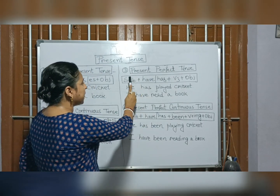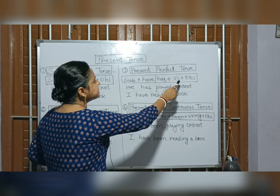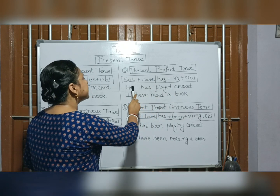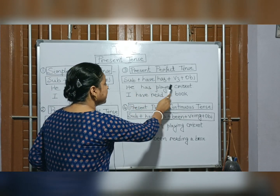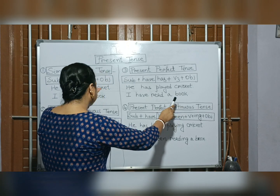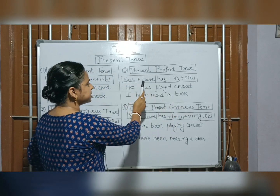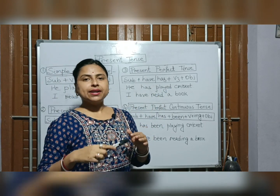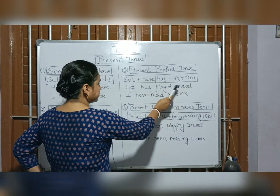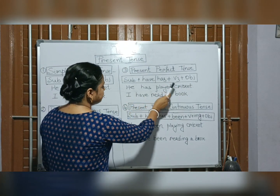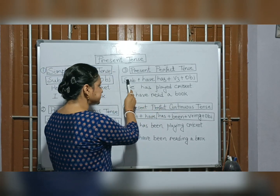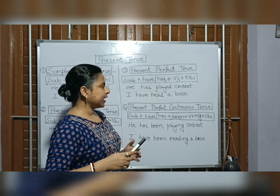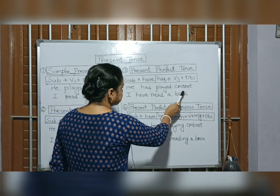For present perfect tense, the structure is: subject plus have or has plus V3 plus object. Example: 'He has played cricket' — 'has' is used because 'he' is third person singular, and 'played' is V3. Also: 'I have read a book' — 'read' here is the V3 form.